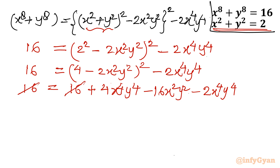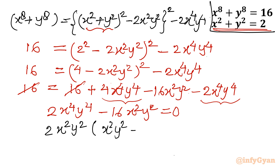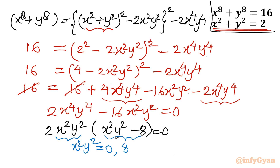The 16s cancel on both sides, leaving 2x⁴y⁴ − 16x²y² = 0. Taking out the common factor 2x²y², we get 2x²y²(x²y² − 8) = 0. So the conclusion is x²y² = 0 or x²y² = 8.